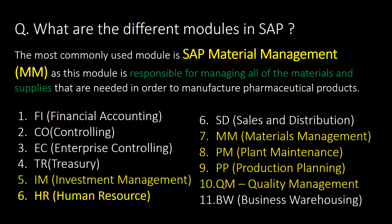What are the different modules in SAP? The most commonly used module in SAP is material management (MM), as this module is responsible for managing all the materials and supplies that are needed to manufacture pharmaceutical products. Here is the list of 11 important different modules in SAP.